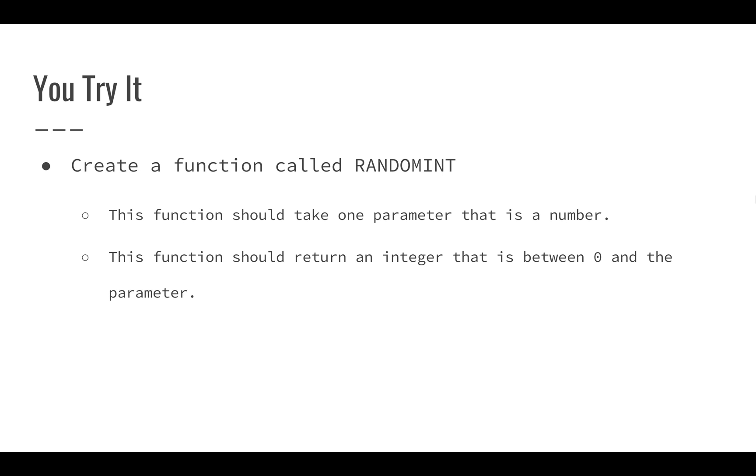The third function is called randomInt. You should take one parameter that is a number, and it should return an integer that is between 0 and the parameter. So if you think back to one of our videos, we actually tried this out. We did something like this. See if you can figure out how to create just a random integer.